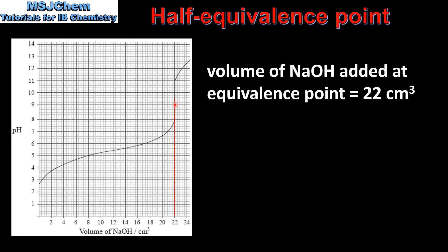To determine the volume of NaOH added at the equivalence point, we draw a straight line from the equivalence point down to the x-axis, and as you can see, the volume of base added is 22 cm³.